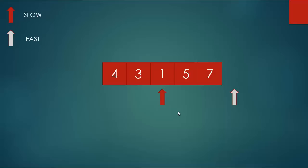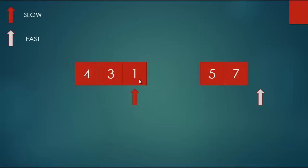We partition the linked list from the middle — specifically from after the middle element. If you have a linked list with an even number of elements, the split is straightforward. But if the number of elements is odd, the extra element is attached to the left partition, not the right. Remember that when programming: by convention the extra element goes to the left partition.